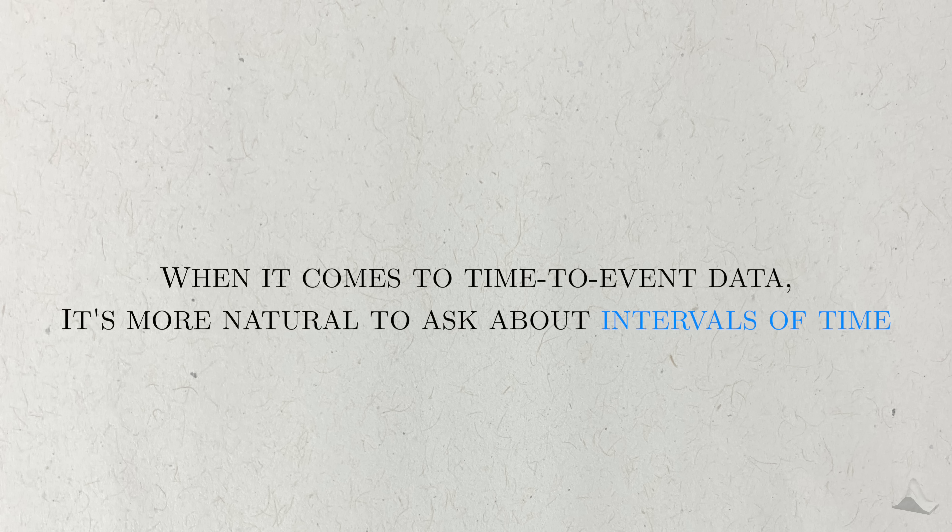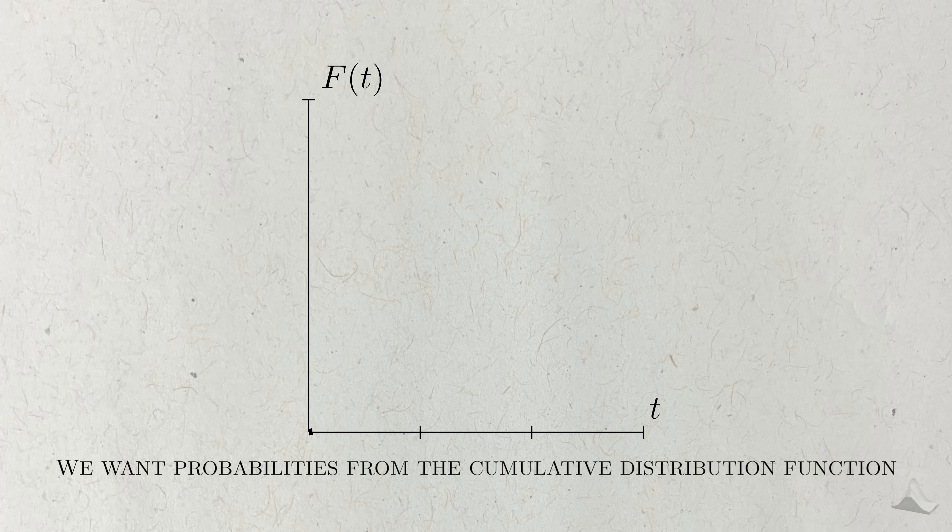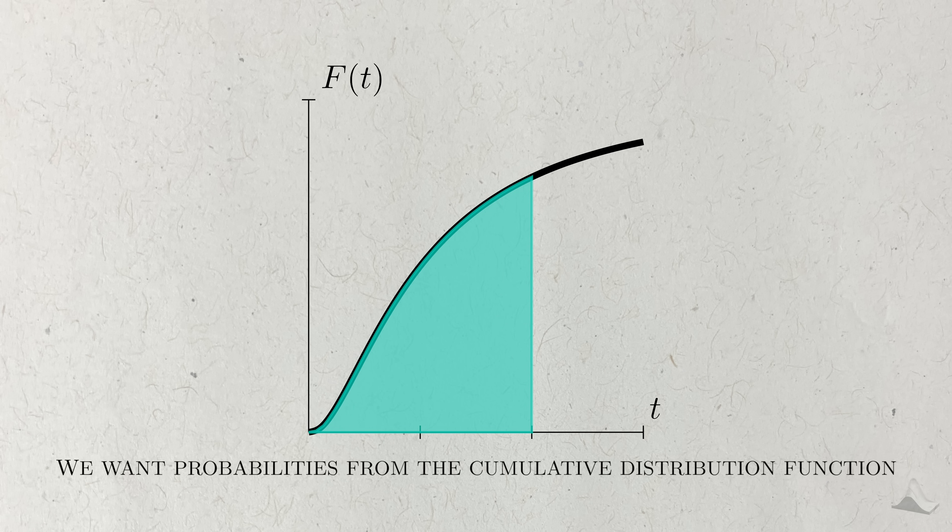When it comes to time, it's more natural to ask questions about intervals of time. For instance, if dying is our event of interest, we might want to know the probability of living until age 75. That is, we want to get probabilities from the cumulative distribution for the time to event data instead. This will look different depending on whether the probability distribution is discrete or continuous, but the idea is the same in either case.